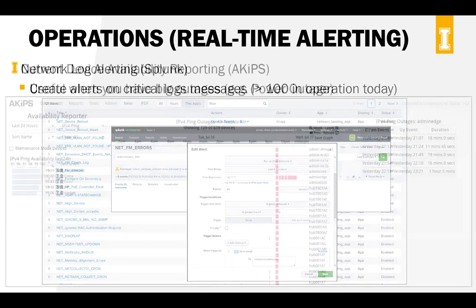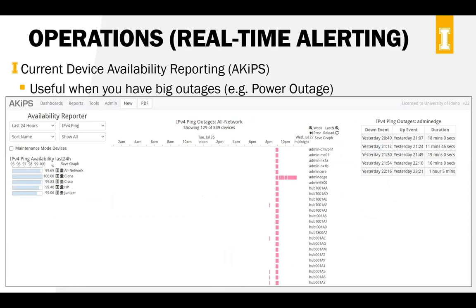What happens when you've got a power outage for half of campus? In this case we were doing maintenance last night and we had 129 out of 840 devices offline at one point. This can happen unplanned with a power outage. That's the point where you go in and try to turn off that proactive alerting as fast as possible because it's just generating tons of alerts — you already know you have a problem and you don't need your pager filled up. So we turn that off and then we turn to ACIPs and its device availability report.